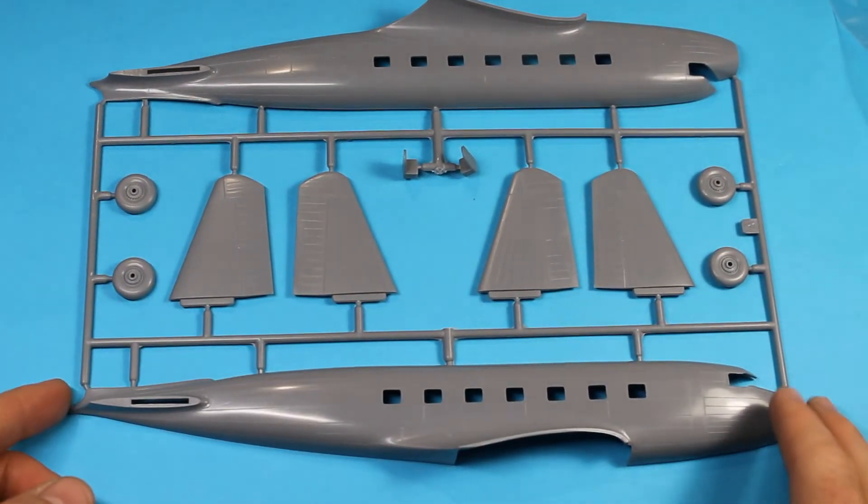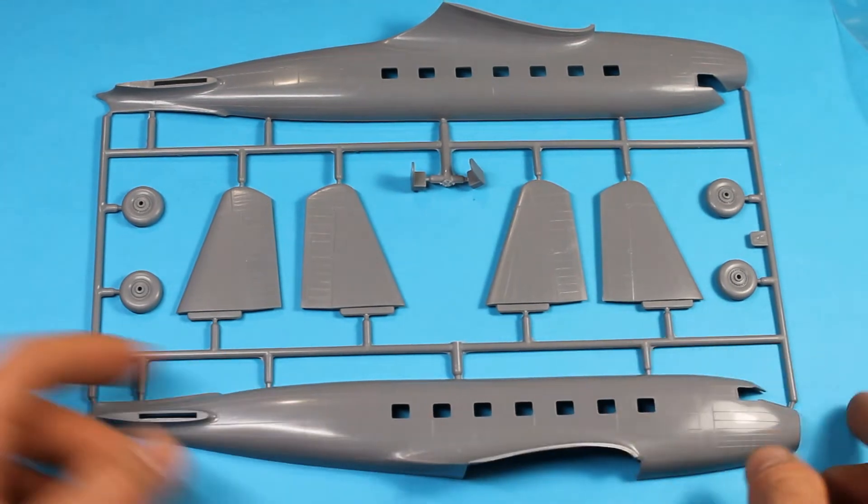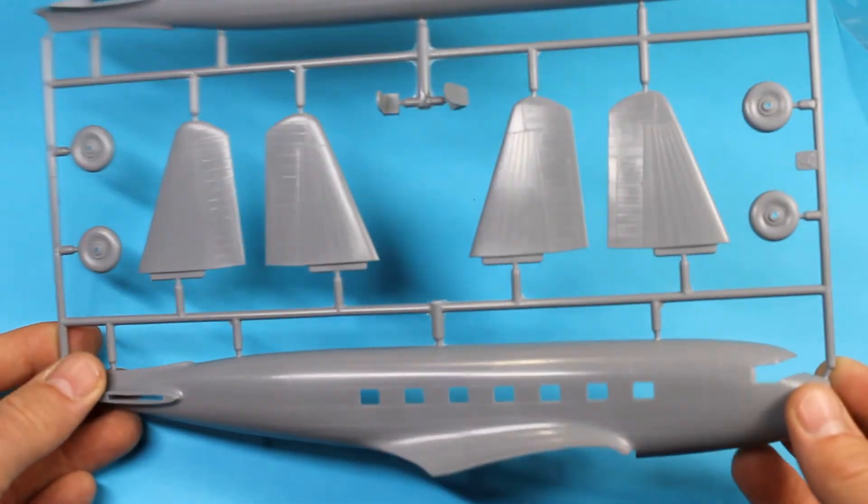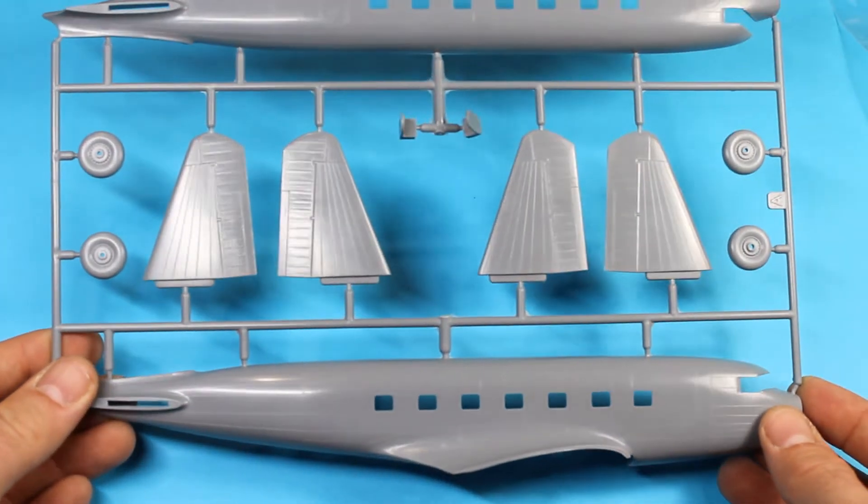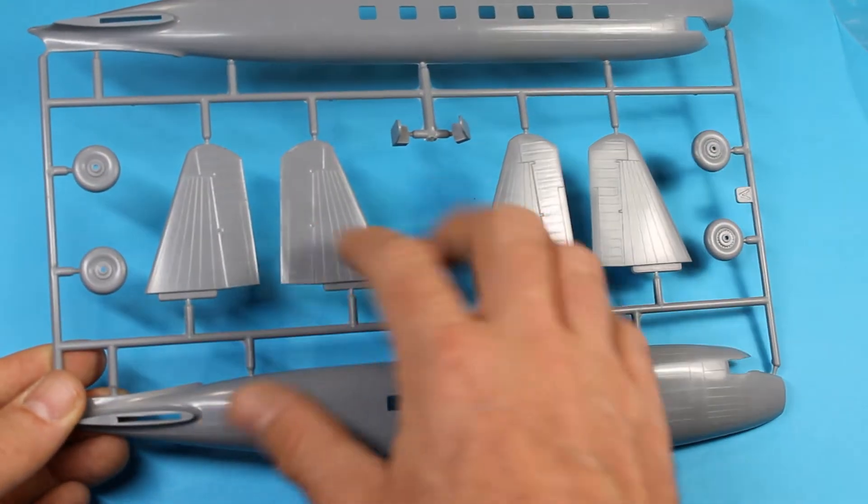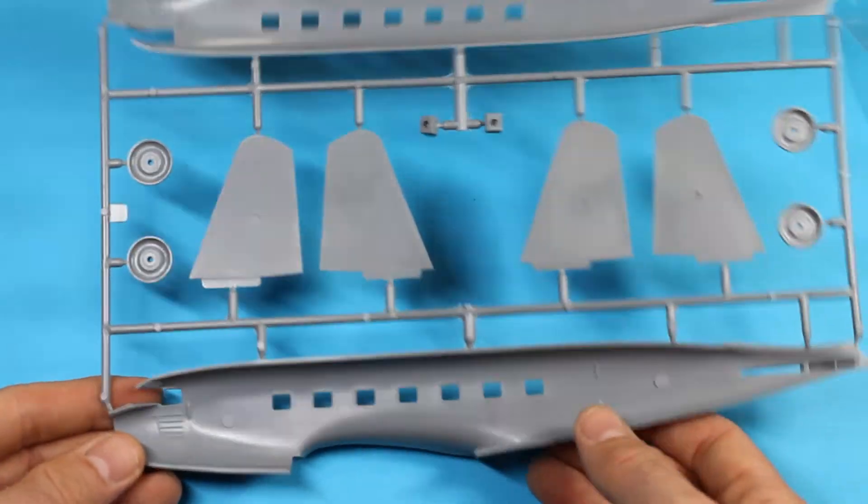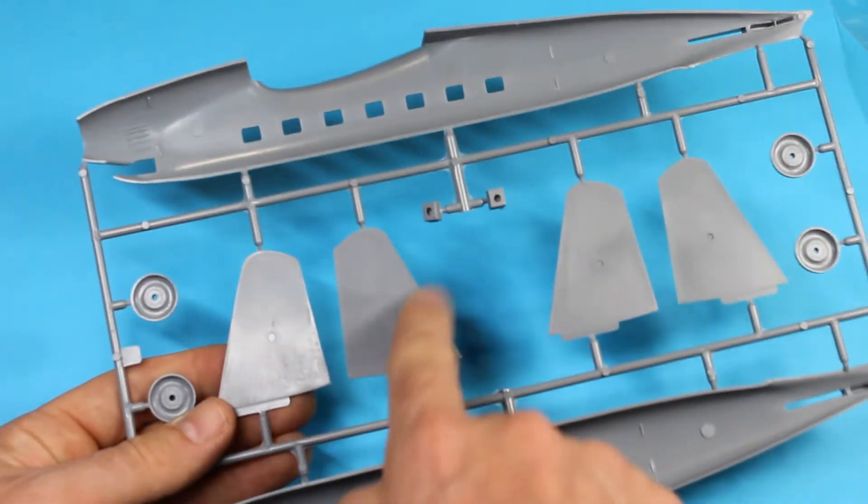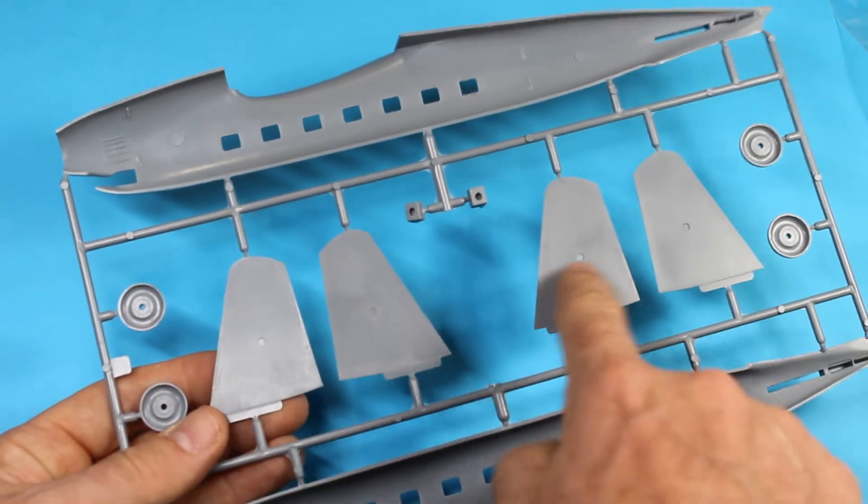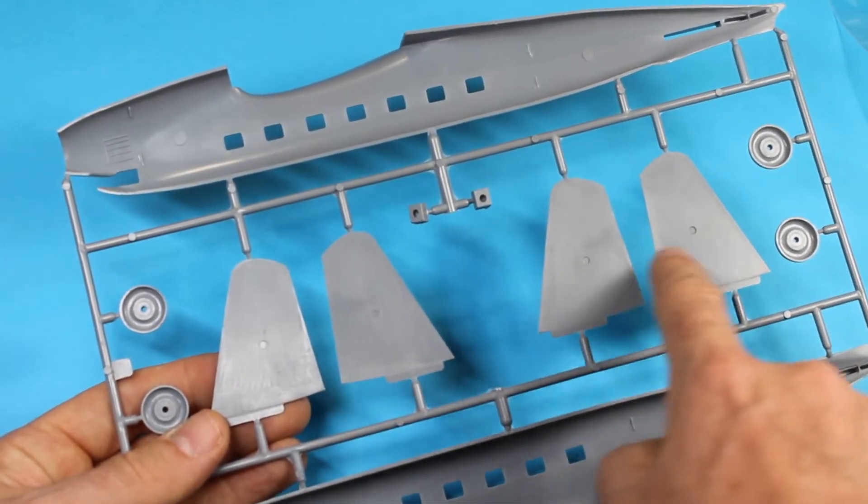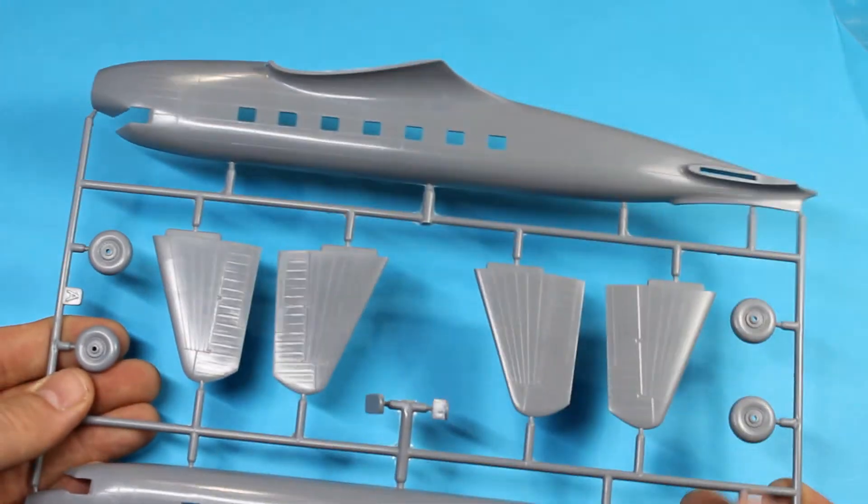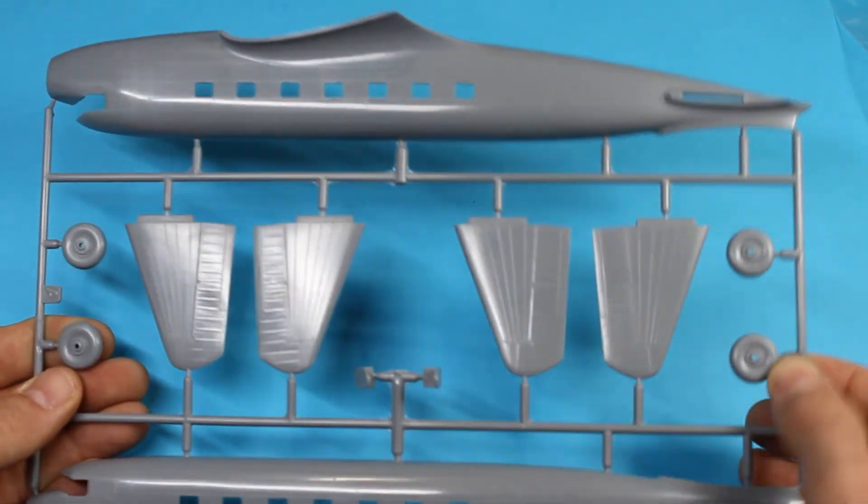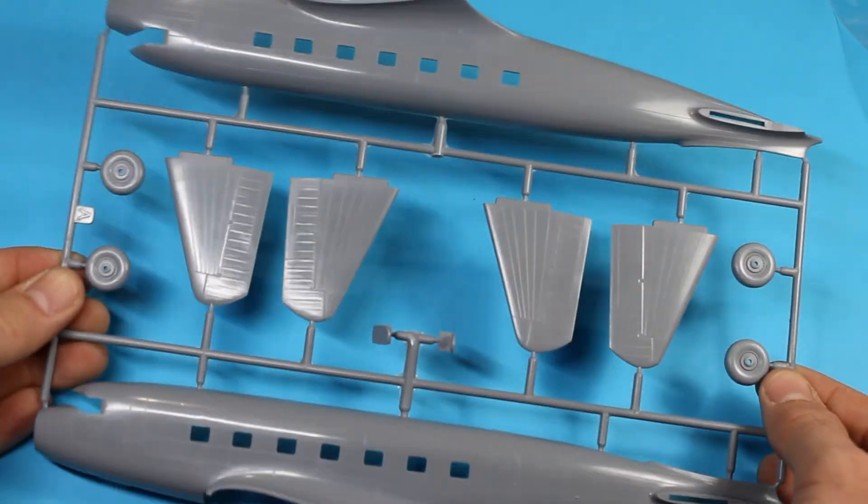Looking at the first sprue there, you've got the two fuselage halves covered in the iconic panel lining that these aircraft are well known for, and it shows up and that's all recessed, which is good to know. On the inside, it's blind, so obviously it's only been molded on one side, so there's no interior detail there. Blind here with the halves of the horizontal stabilizers. You've also got the undercarriage there, the wheels, which they look fine. They do the job as far as this is concerned.